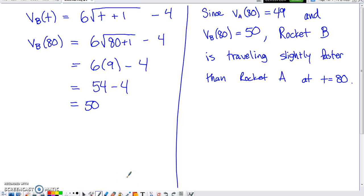I didn't have enough room on this screen, so I went to a new screen. What is the velocity of rocket B at time 80? Here's the general formula for the velocity of rocket B at any time. What's the velocity at time 80? It's kind of nice because we get 81 under the root, which obviously is 9. Do the multiplication, do the subtraction, you get 50. So the velocity of rocket A at 80 is 49. The velocity of rocket B at that same time is 50. Rocket B is just a little bit faster than rocket A at this moment.